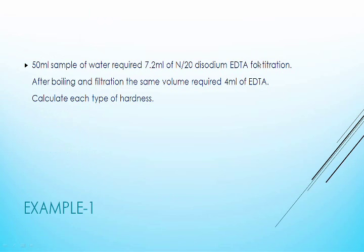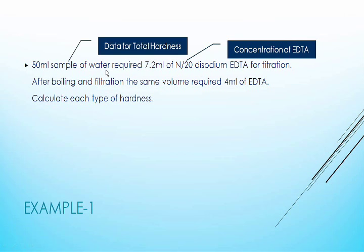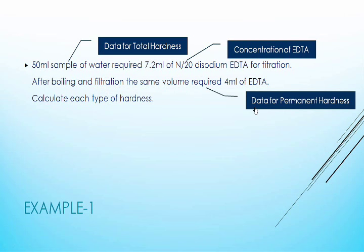Here is one example. In this example, the concentration of EDTA is given, and also EDTA consumed for 50 ml of water sample, which will be useful to calculate total hardness. In the next sentence, EDTA required for boiled and filtered water sample is given, which can be used to calculate permanent hardness.